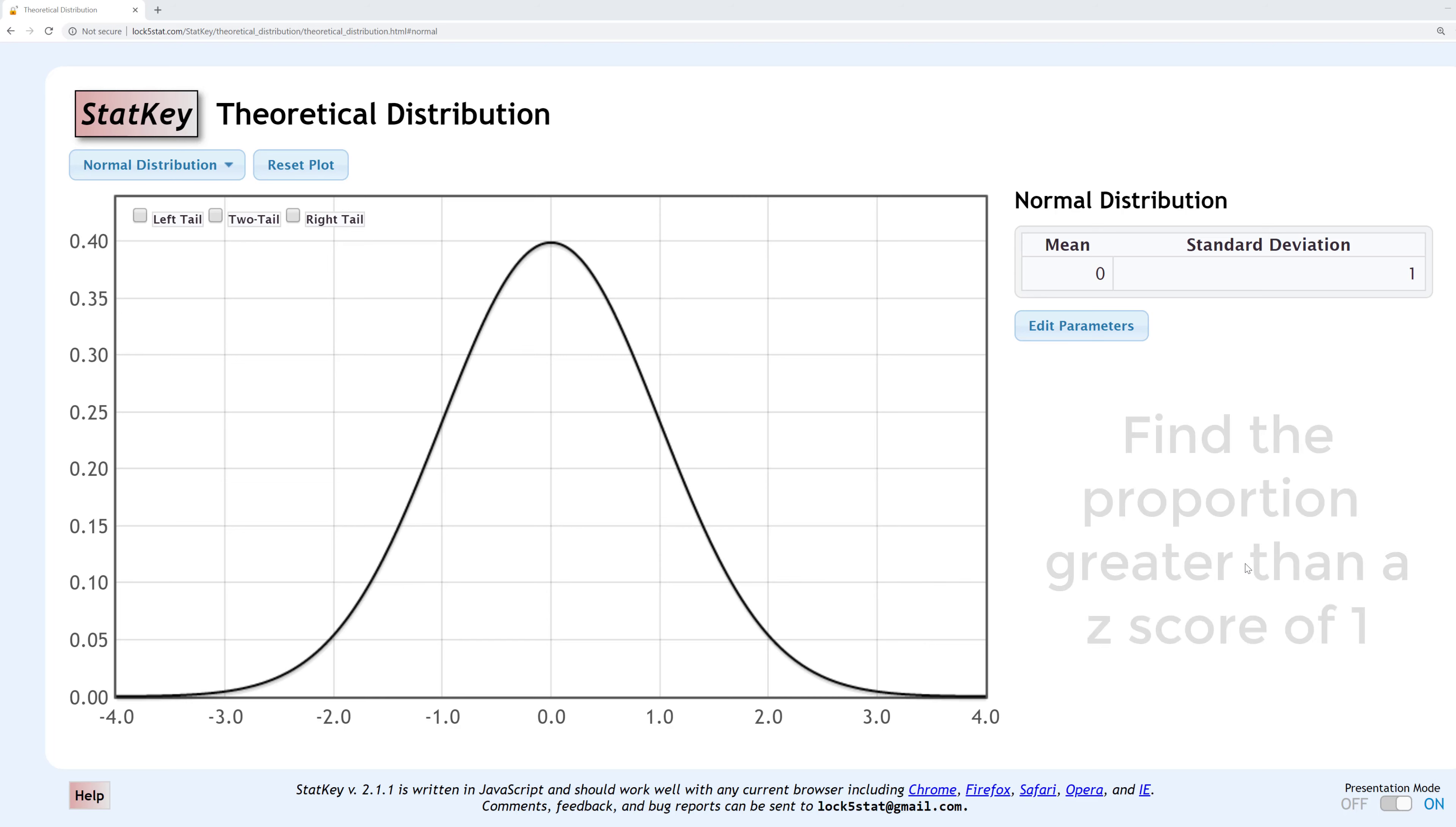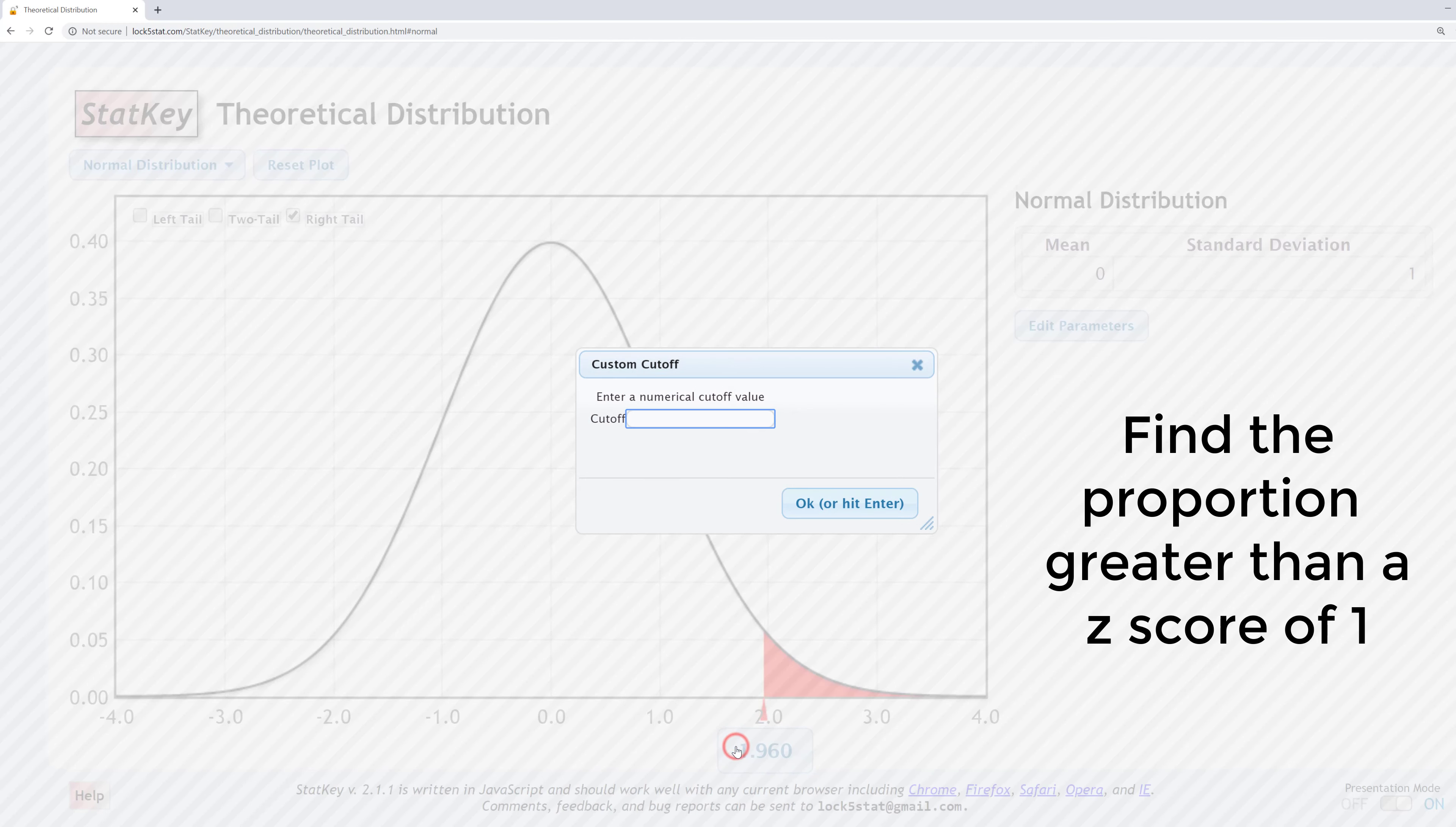For the first example, find the proportion greater than a Z score of 1. Greater than means that we're looking for the area to the right of Z equals 1. I'll click right tail. The number at the bottom is the Z score. The default here is 1.960. I'll change that to 1.